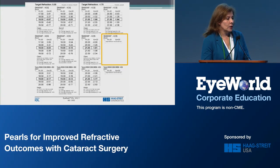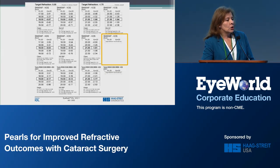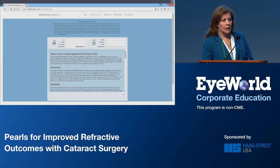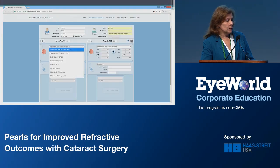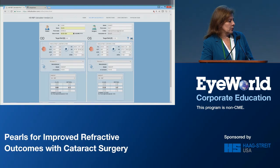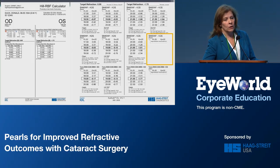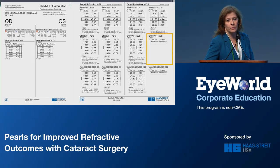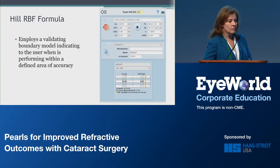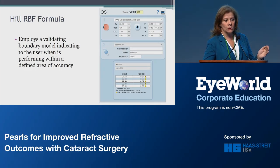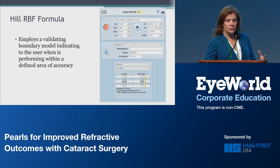Version one doesn't have the capability of doing monovision or any other target than plano. So in that case, when we have these patients, we go to the online calculator and we just enter the information as required. We can have our measurement for a monovision patient, and here we can see the printout from the online calculator, very similar to the printout obtained from the LENSTAR. One thing that we love about the formula is if there is a measurement that doesn't make any sense at all, it warns us that the measurement is out of bounds and that we should not use that power.